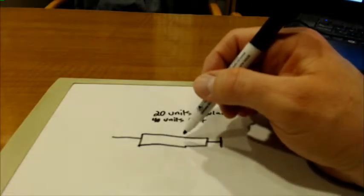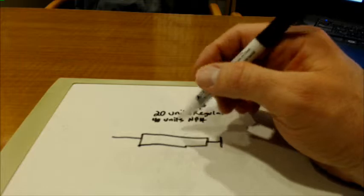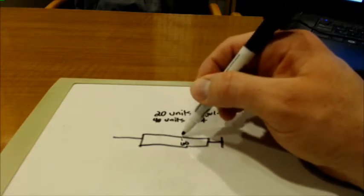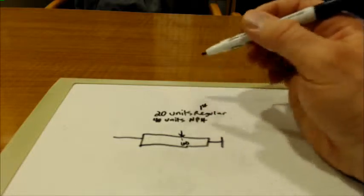So what I mean by that is the total is 60 units, so here's my first mark at the total—my 60 units. And then since the regular was drawn up first...